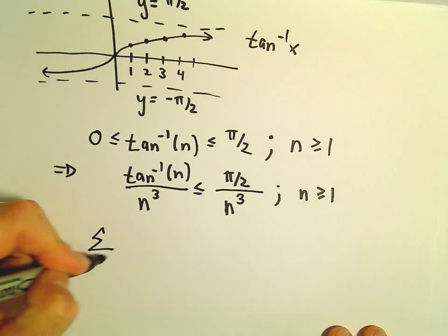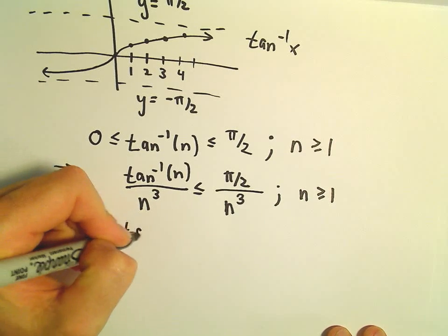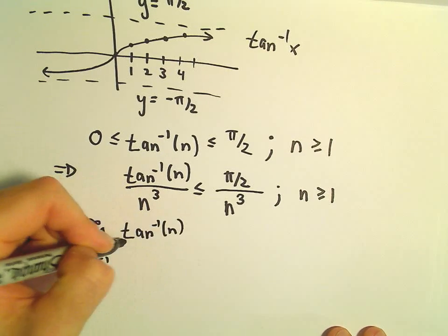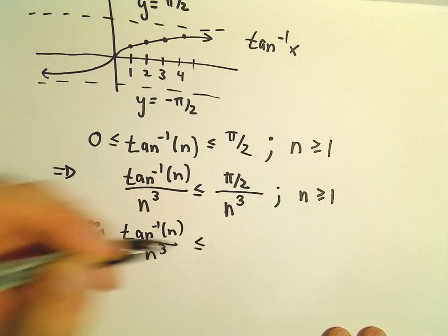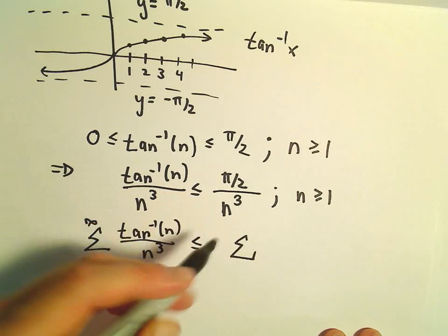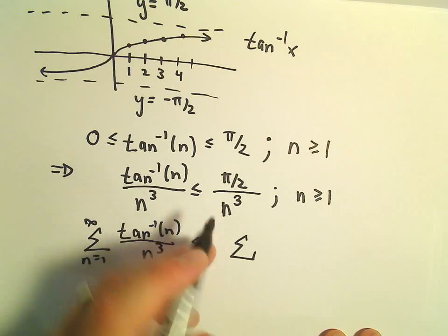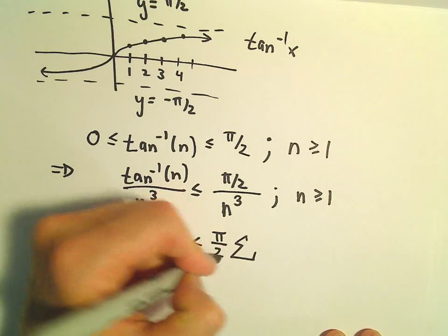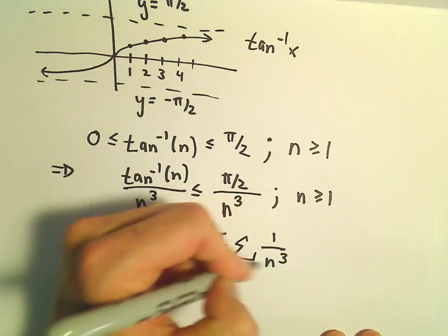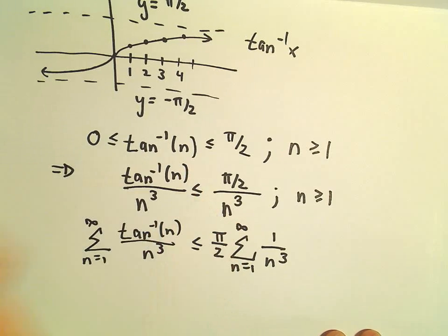So that means the series from n equals 1 to infinity of arctangent of n over n cubed would be less than or equal to the series π/2 divided by n cubed. I'm just going to pull the π/2 out front because that's a constant and we are certainly allowed to do that.